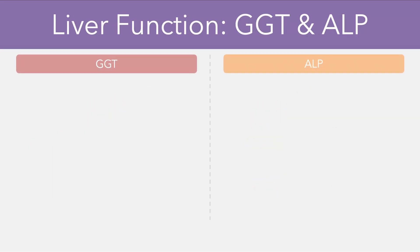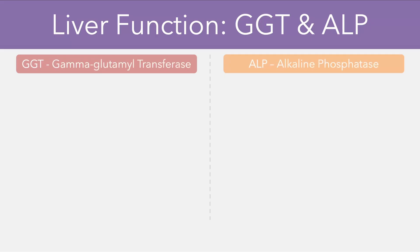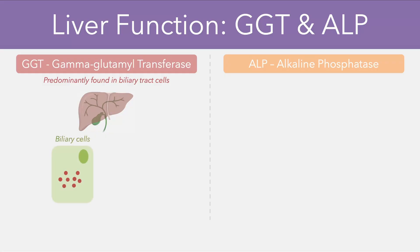Let's now turn towards our other two liver enzymes, which include GGT and ALP, which stand for gamma-glutamyl transferase and alkaline phosphatase, respectively. GGT is found predominantly in the cells of the biliary tract, so damage to any of the biliary cells will result in the enzyme leaking into the blood. Examples of possible pathologies can include biliary obstruction with backflow of bile, or primary sclerosing or primary biliary cholangitis, which are inflammatory autoimmune conditions.